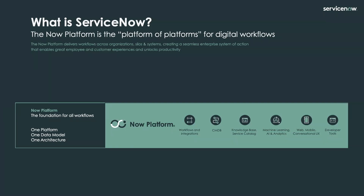These capabilities are offered on one platform, one data model, and one architecture. Some of the core capabilities include a workflow automation engine. What the workflow automation engine enables you to do is take processes that were previously manual or took a very long time to track — processes tracked through email, word of mouth, or phone calls. With the workflow engine, you're able to digitize and automate them, gaining visibility, standardizing how work moves through your organization, and improving overall service quality.